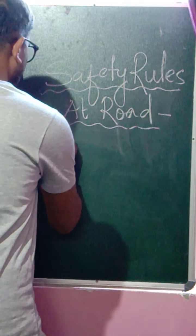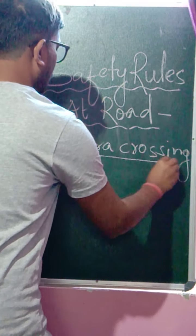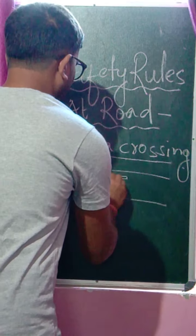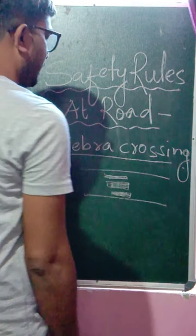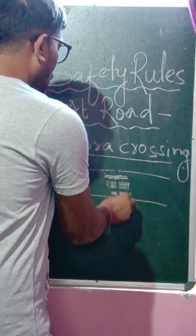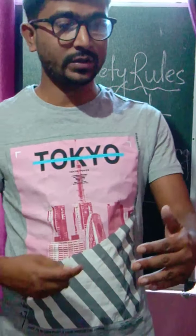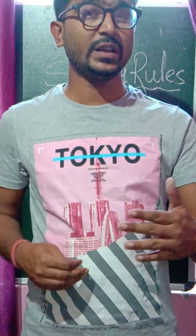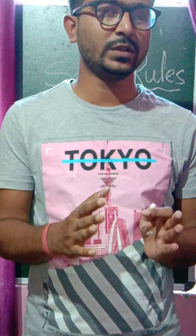We have heard about zebra crossing. Why zebra crossing? In the roads, in the middle of the road, there are certain white lines — these marks are zebra crossing. They are made for people to cross from one side to the other. According to traffic rules, we should always cross on the zebra crossing that is made; we should not be crossing from here and there.